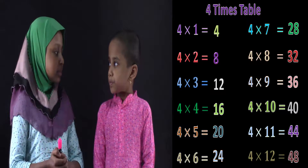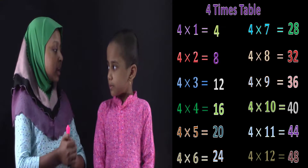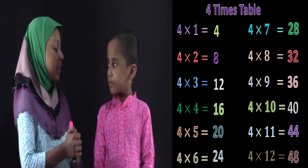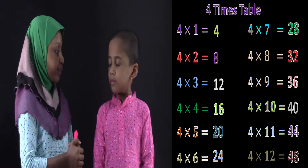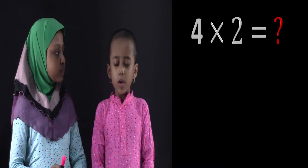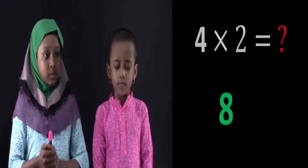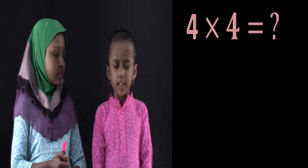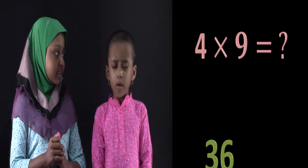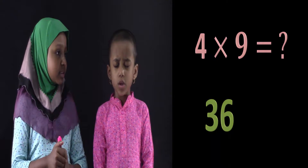Now that you said your four times tables, let's test and see if you can say them without order. What's 4 times 2? 4 times 2 is 8. What's 4 times 4? 4 times 4 is 16. What's 4 times 9? 4 times 9 is 26.